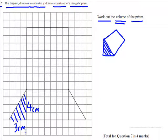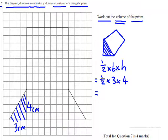So I'm going to find that area first. So half times base times height. So half times base, which is 3, times height, which is 4. So the area of that triangle is 6 centimeters squared.